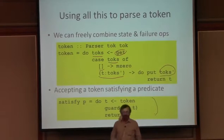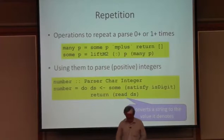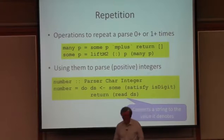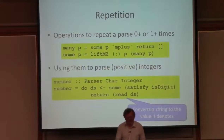Here is another derived operation that accepts a token satisfying a predicate. So I can just parse a token, use the guard operation that we saw earlier to fail unless the token satisfies P, and return it. Many P is designed to parse something that parser P will accept zero or more times. Some P accepts it one or more times. To accept P zero or more times, do a some P, or accept it zero times — that is, just return the empty list.